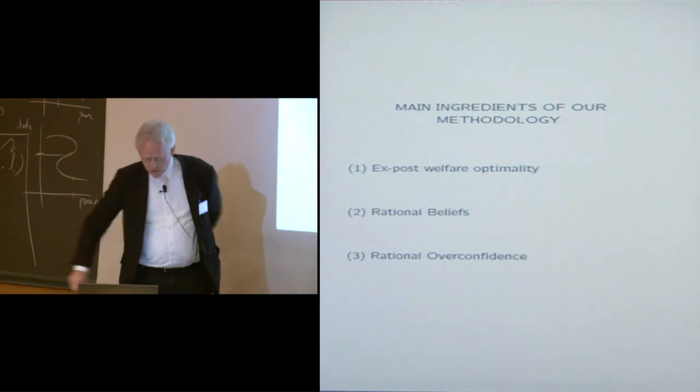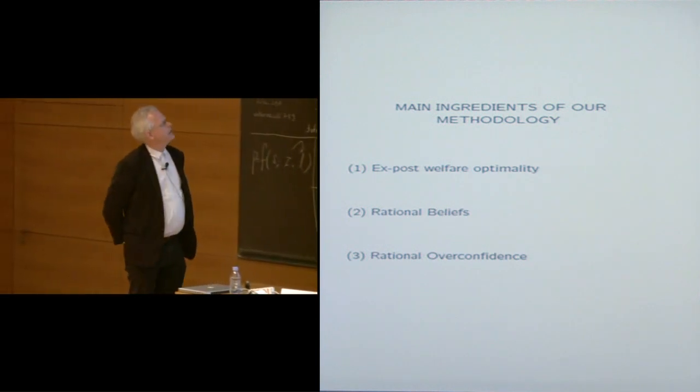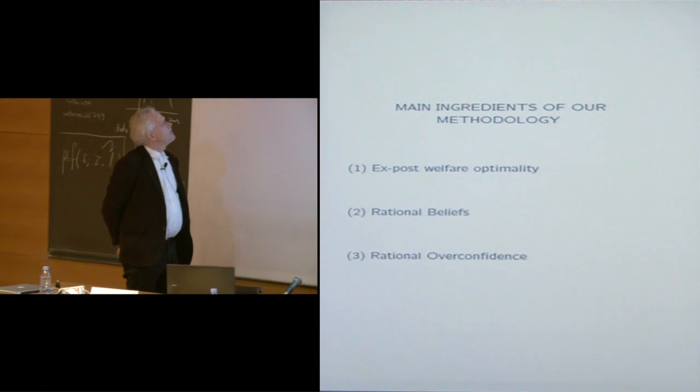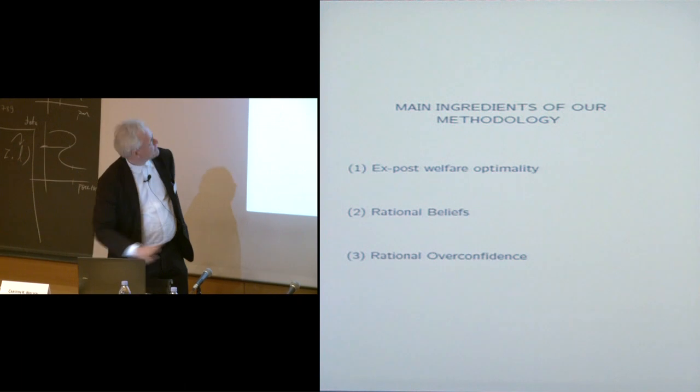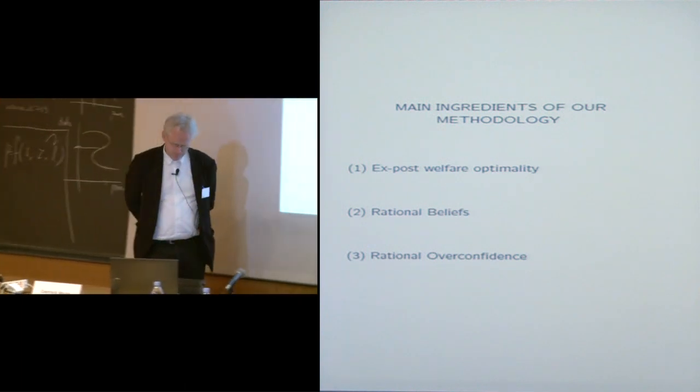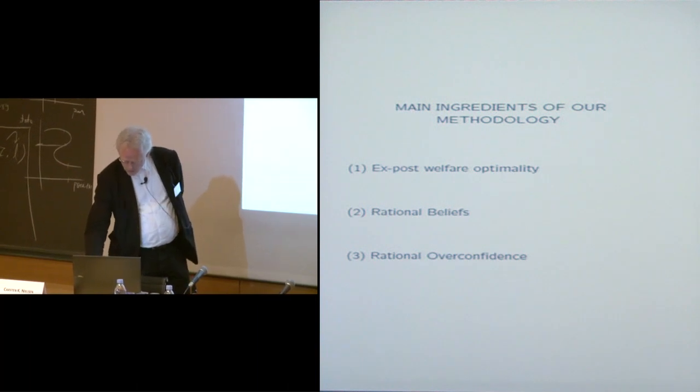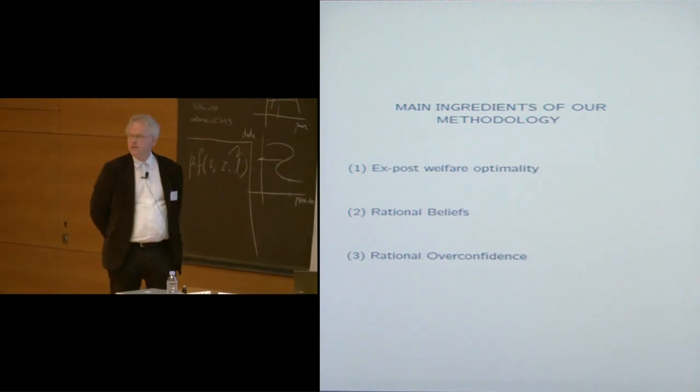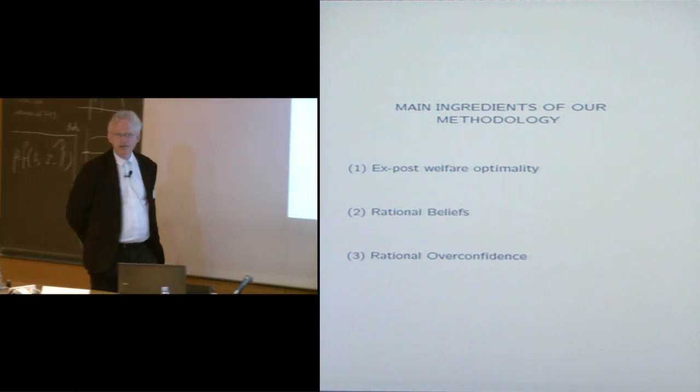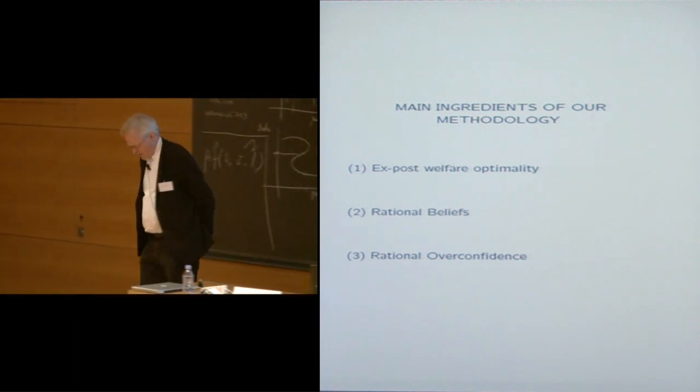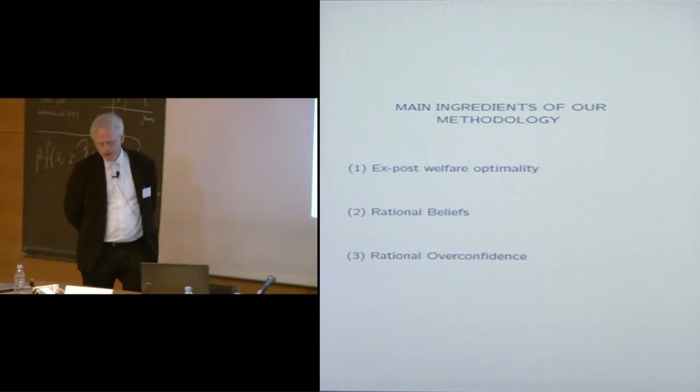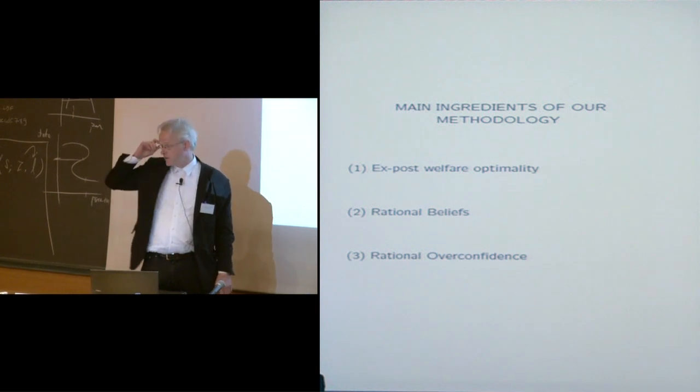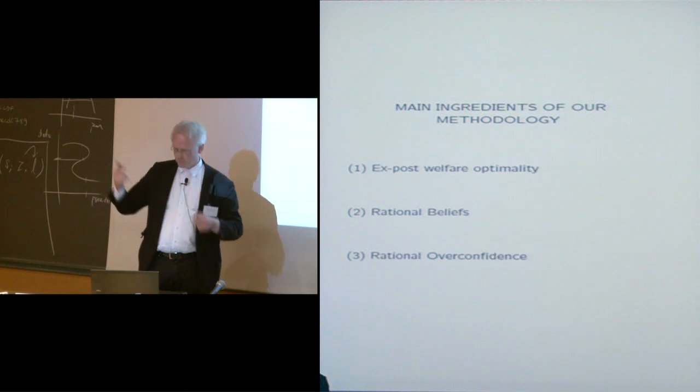So the main ingredient of my talk today is, and I'm going to go quickly over these things, is ex-post welfare optimality as opposed to Pareto optimality, rational beliefs, and rational overconfidence. And then after briefly talking about these general principles and ideas, I will go back to the social security example and argue that we can rationalize social security, that is, forced savings by individuals without having to assume that agents are irrational, that is, without having to assume a position of paternalism. By the way, if you have any questions as we go along, I'll be very happy to take those.